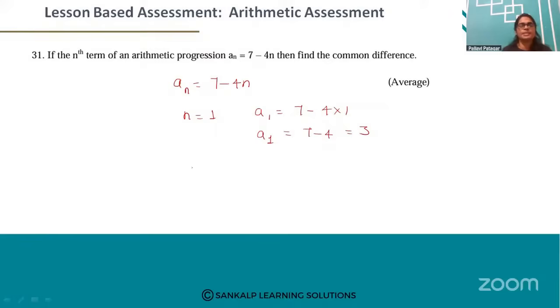To find the second term, if n is equal to 2, a2 is equal to 7 minus 4 into 2. This is equal to 7 minus 8, which is equal to minus 1.